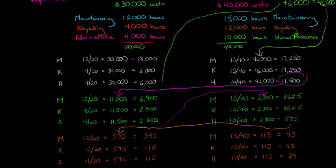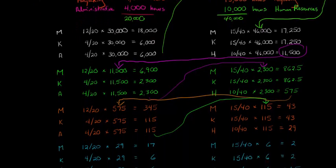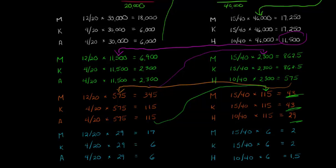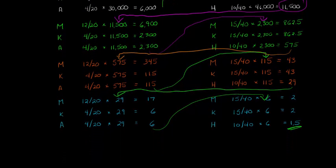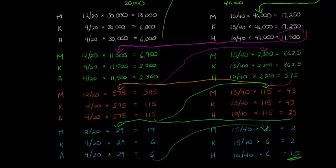Since $6 goes back to admin, we allocate that too. We bring the small remaining amounts back and forth. The pattern is clear — each time we allocate some to mountaineering and some to kayaking, the residual amounts get smaller and smaller until they're essentially zero. We're pretty much at zero at this point, so we stop. You can see how we go back and forth, but each time the amount that we allocate gets smaller.